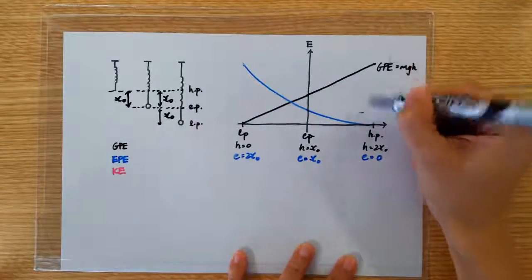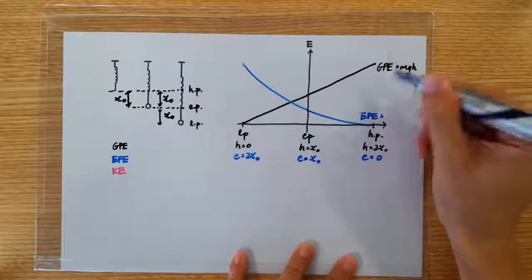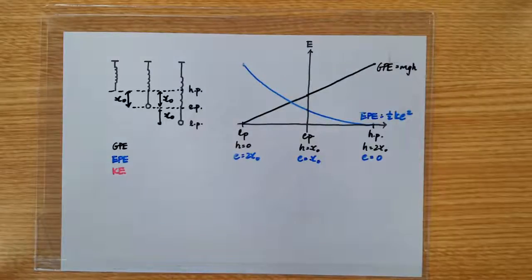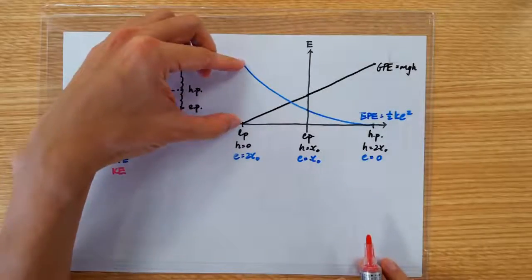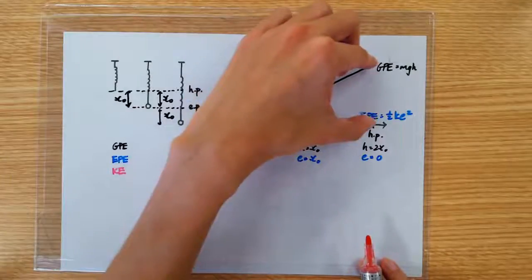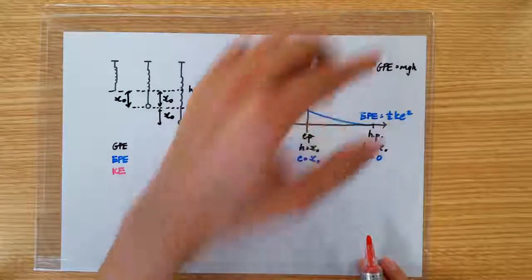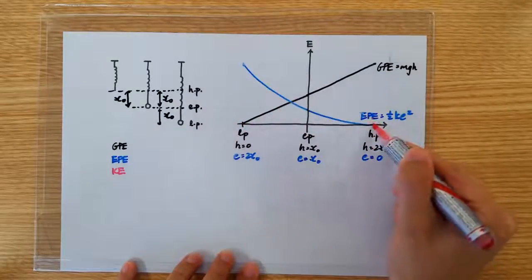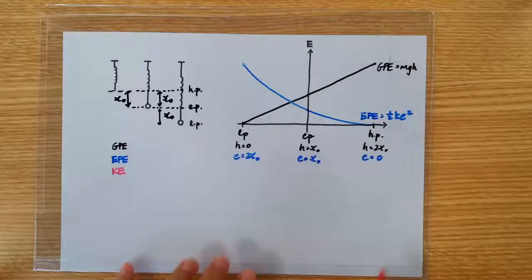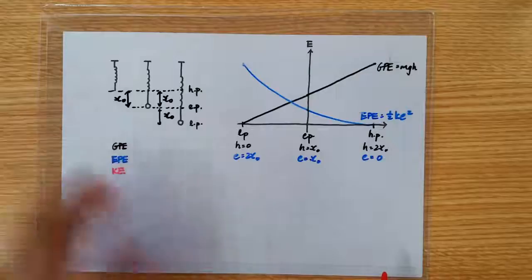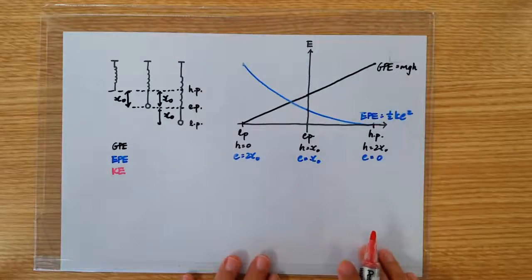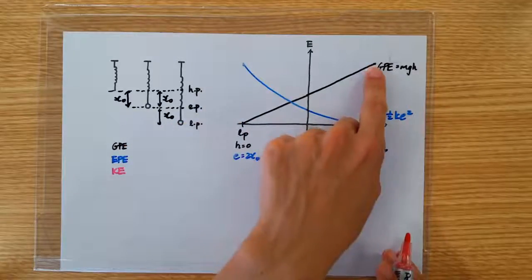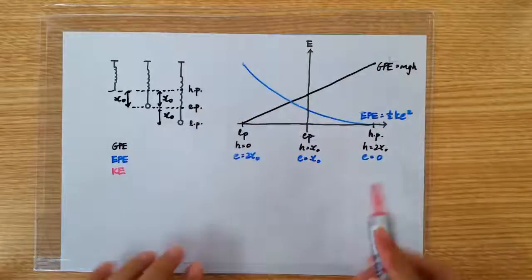So let me write here, EPE is 0.5Kx². Now, you may be asking how I know that the EPE here at the lowest position is equal to the GPE at the highest position. The reason is because we know that the KE is 0 at the two extreme positions. And if we were to add up these three forms of energy, we should get a constant. So at the lowest position, we have nothing but the EPE. At the highest position, we have nothing but the GPE. So these two values have to be the same.